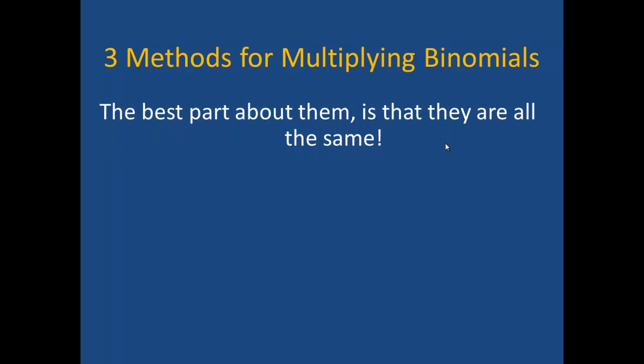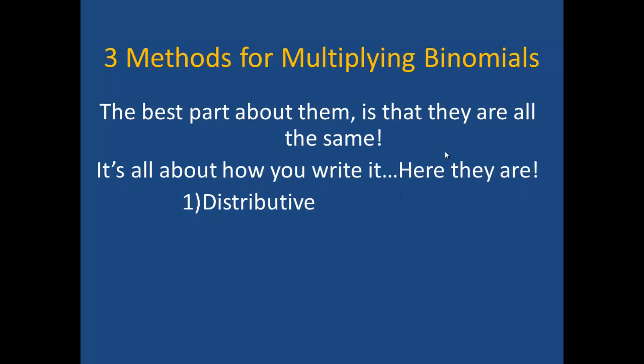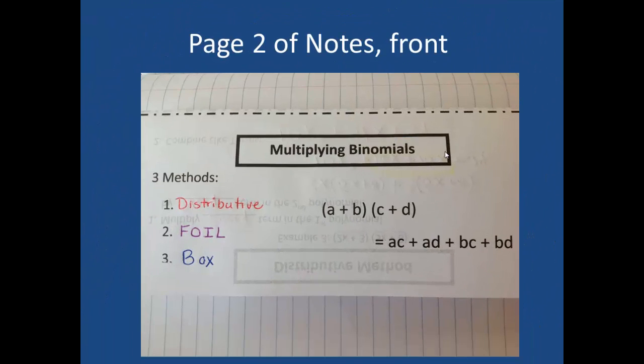There are three methods for multiplying binomials. The best part about these three methods is that actually they're all the same. There's just different ways that you can write it. So here they are: the distributive method, FOIL, and the box method. Perhaps you've already used these in middle school before. Please take a moment to jot these on the front page of your handout.